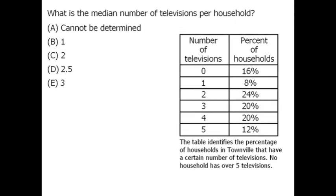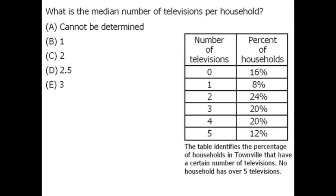To find the median here, let's say that Townville has exactly 100 households. We'll then list the number of televisions per household in ascending order, at which point we'll want to find the middlemost value.